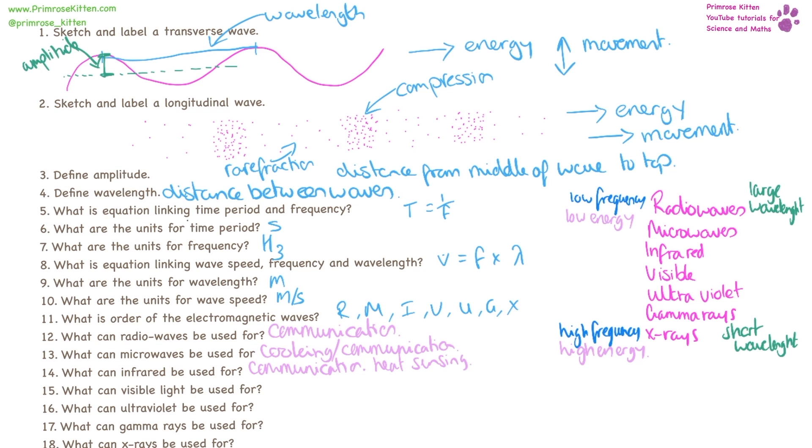Visible light is going to be used in cameras and film. Ultraviolet can be used for security purposes, for example, on notes. Gamma rays can be used for cleaning or treating foods and instruments to kill bacteria, or for cancer treatment. And x-rays are used for seeing broken bones.